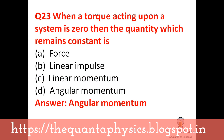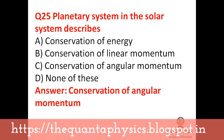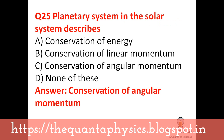When the torque acting upon a system is zero, the quantity that remains constant is angular momentum — this is also an important question, relating to the law of conservation of angular momentum. The orbit of a planet around a star is an ellipse. The planetary system in the solar system demonstrates conservation of angular momentum.